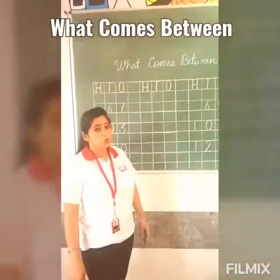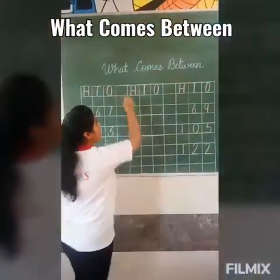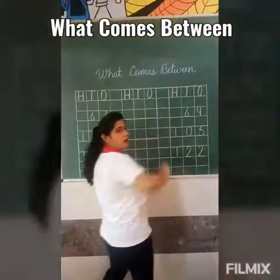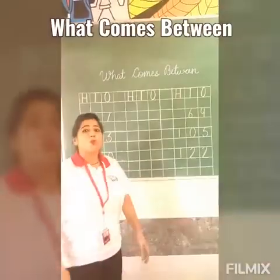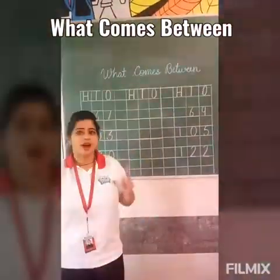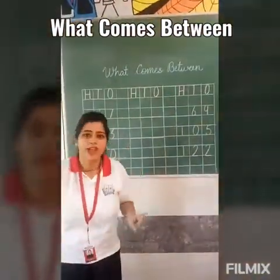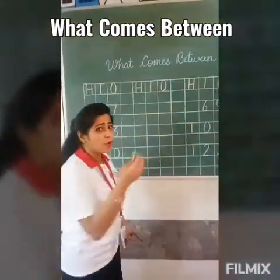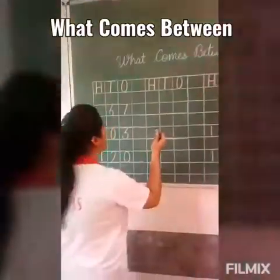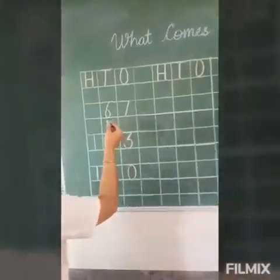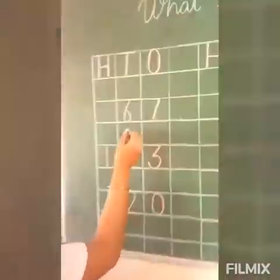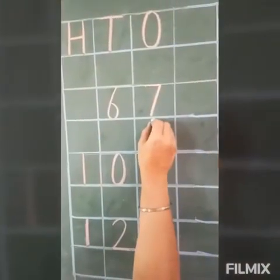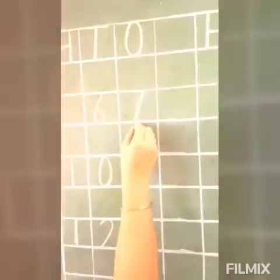Today we will do 'what comes between.' So let's start. Look at the word. Our first number is 67.